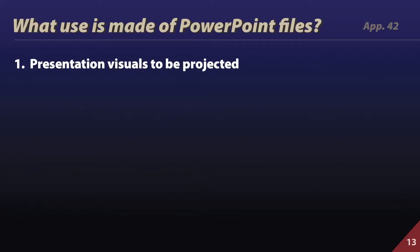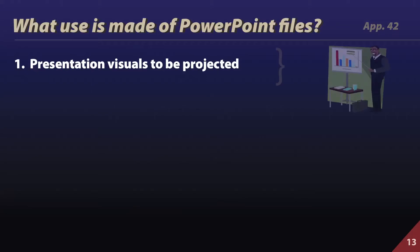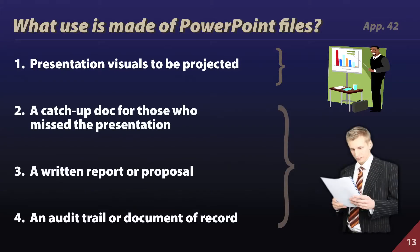In a live presentation, the audience might be anywhere from 2 to 20 or even 100 people reading the visual and making use of it, but none of those audience members are in control of it. It's the presenter who controls the visual. Look at these other uses — all of them tend to involve one person reading at a time, and that person is in control of it.